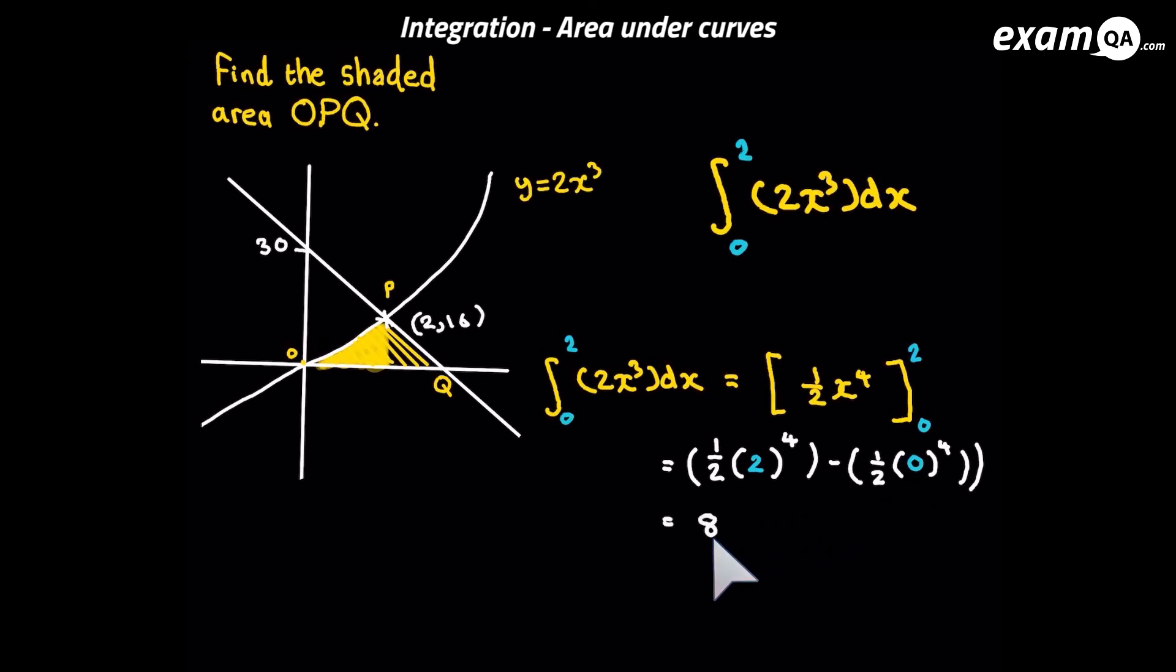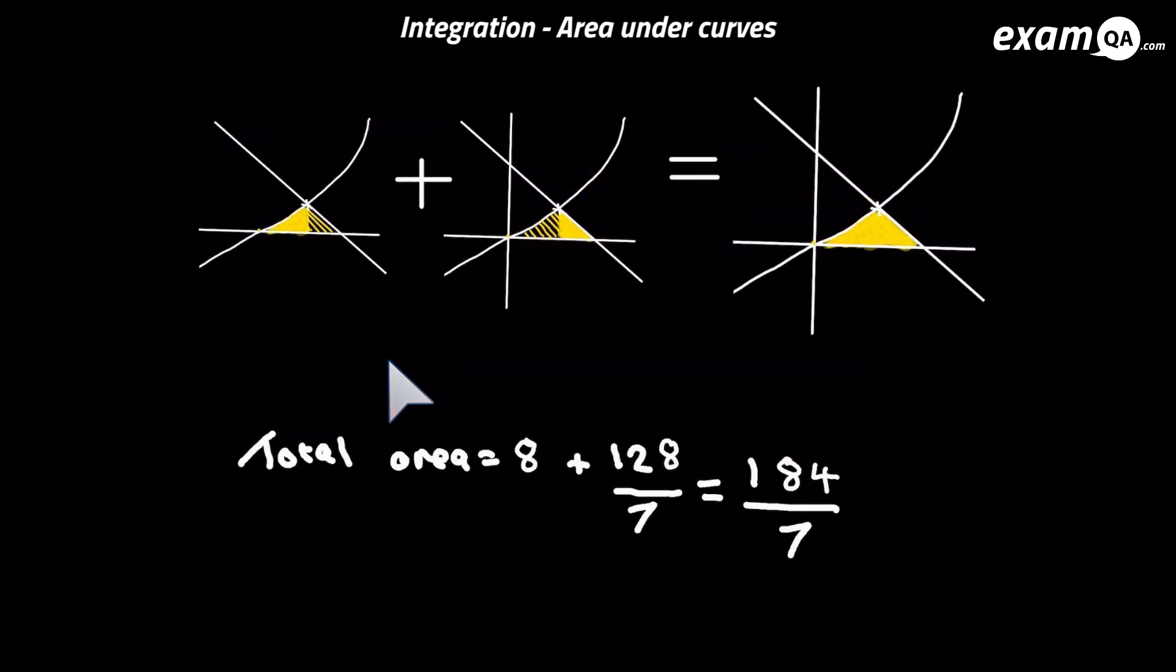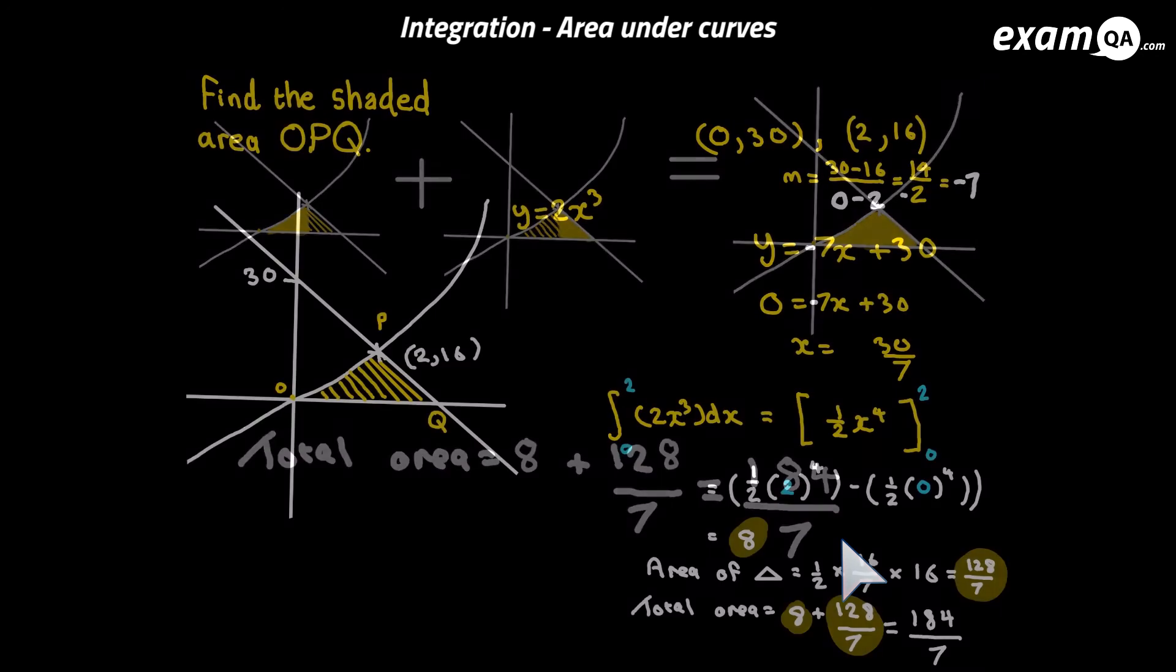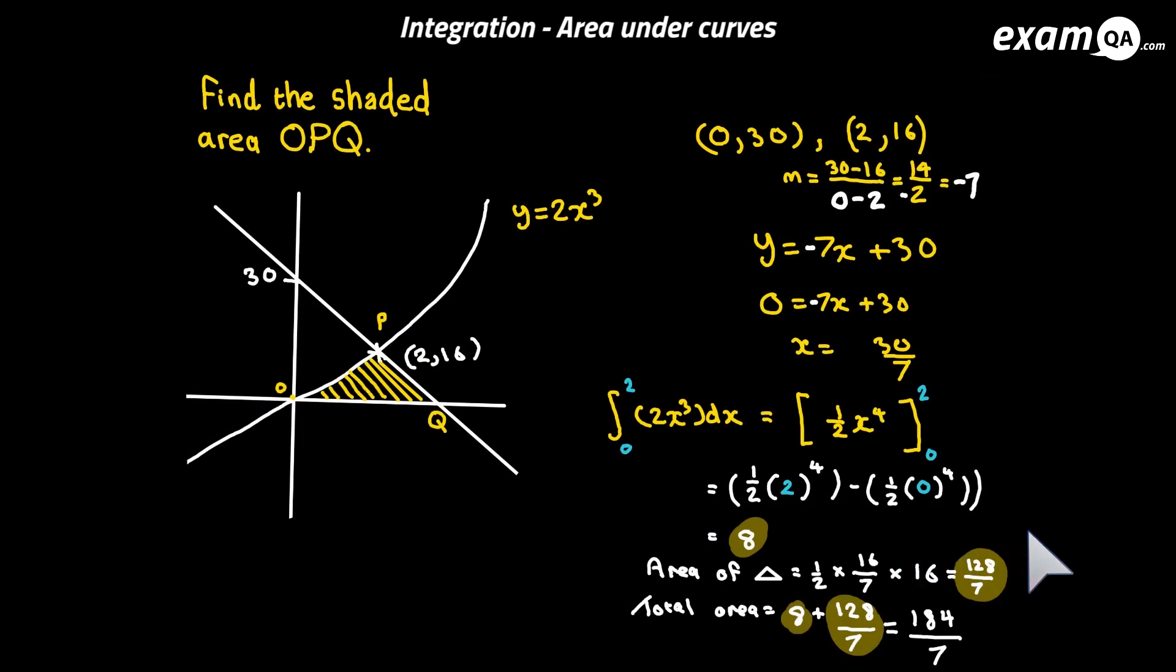So now we've worked out both areas, that little triangle and this shaded bit underneath the curve. We can go ahead and work out the final answer, the area of that total shaded region. It's going to be the 8 plus the 128 over 7, and that gives us 184 over 7. If you can see all the working out in one page, that's here for you. And there we have it.